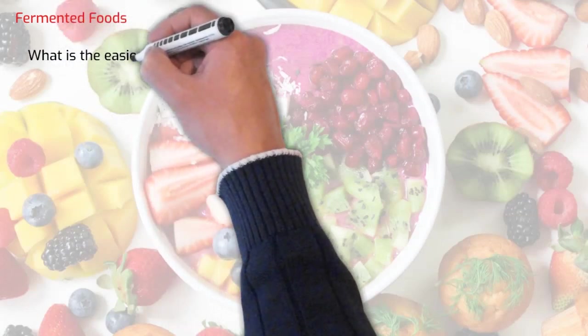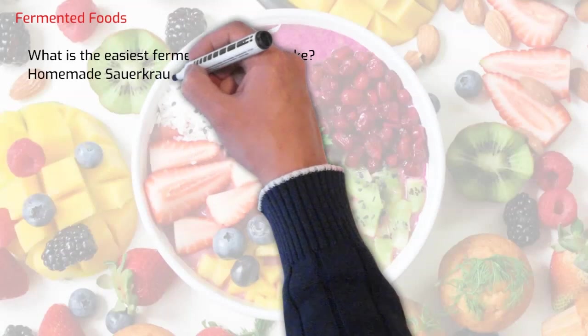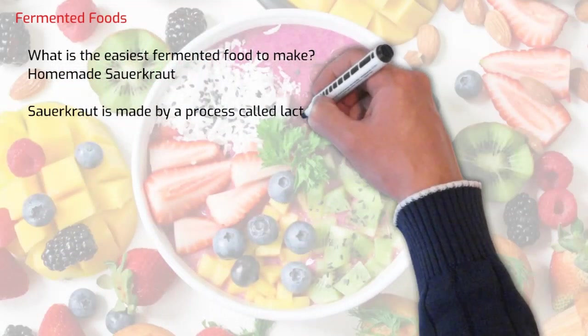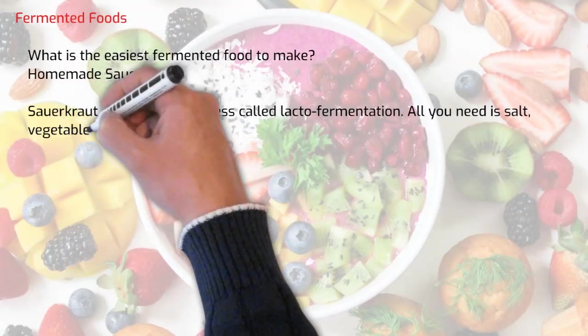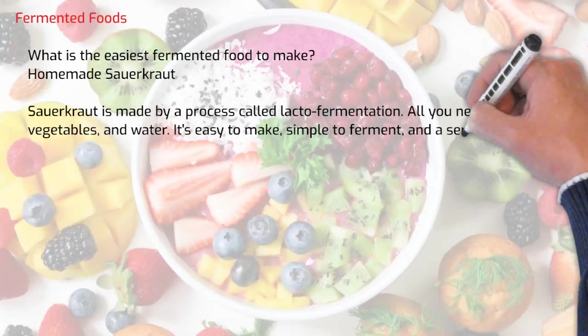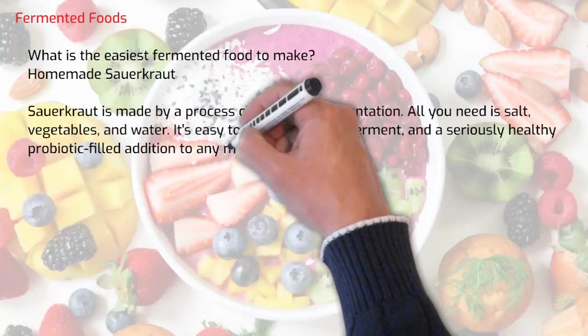What is the easiest fermented food to make? It's sauerkraut. Sauerkraut is made by a process called lacto-fermentation. All you need is salt, vegetables and water. It's easy to make, simple to ferment and a seriously healthy, probiotic-filled addition to any meal.